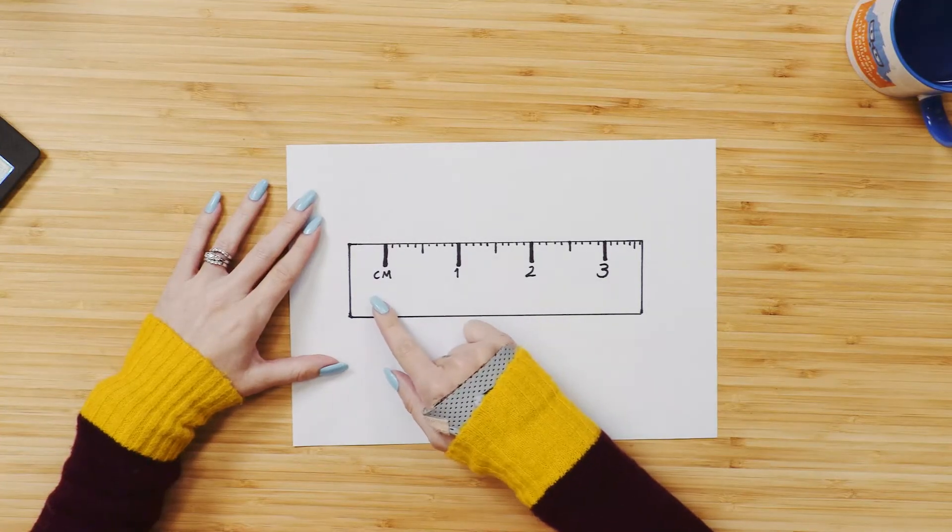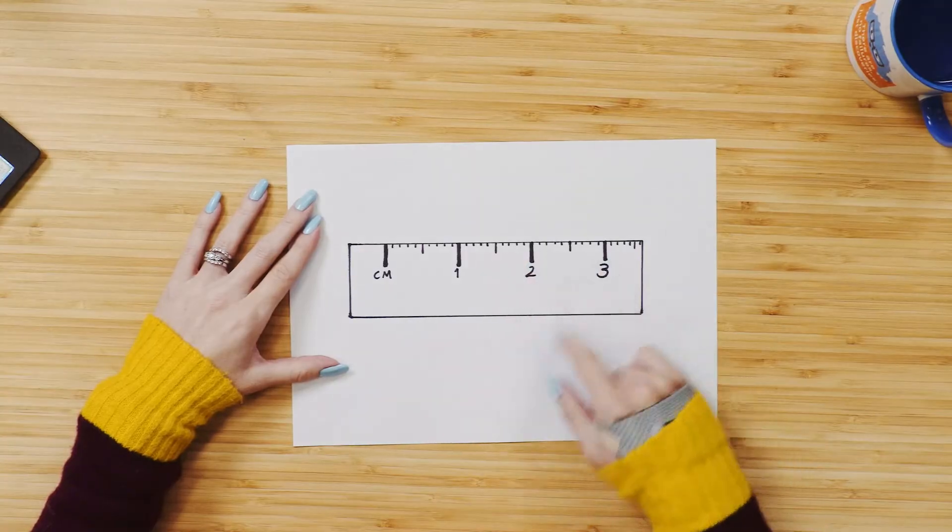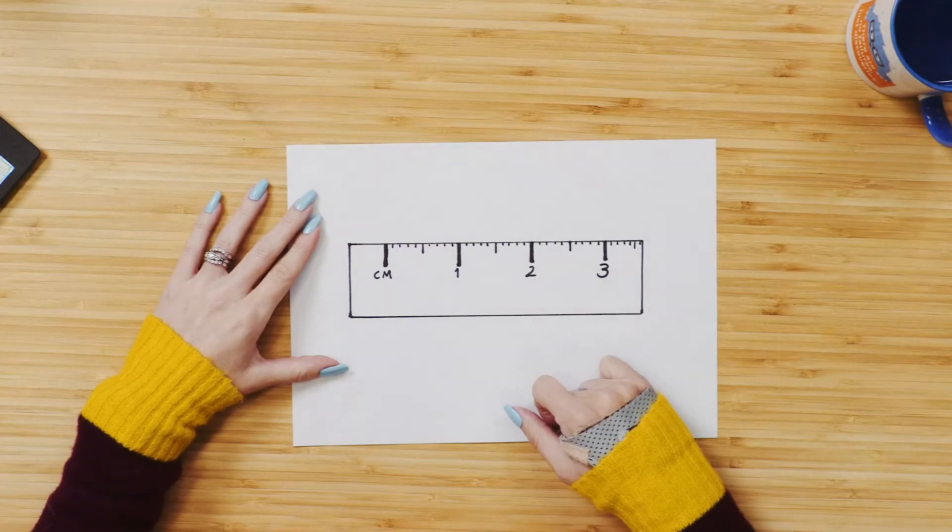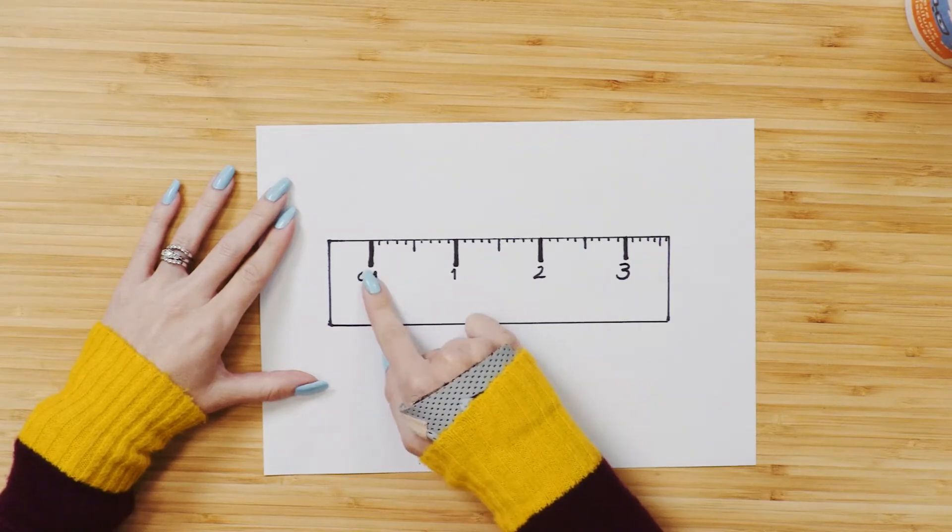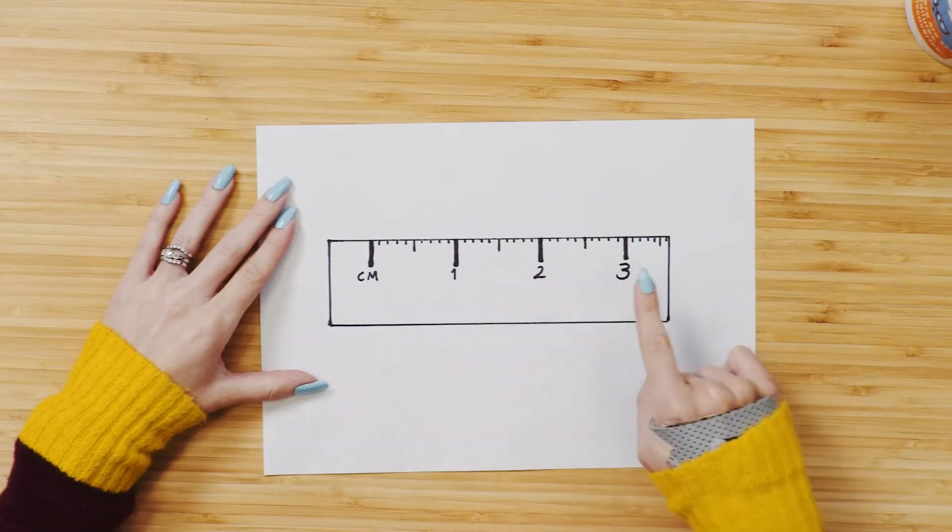When I look at my ruler I can see these nice thick longer lines and these are my centimeters. When I count even though I can't see, I know that there is a zero here and I can count 1, 2, 3.